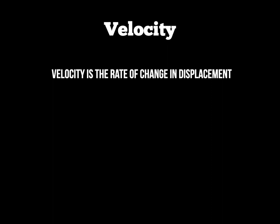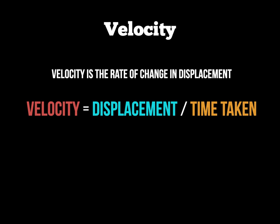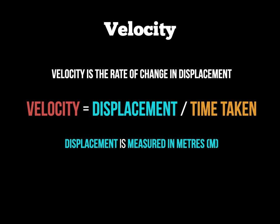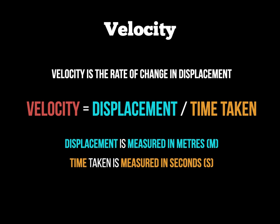Starting with velocity: velocity is the rate of change in displacement — that is, how far something travels from A to B. The calculation is: velocity = displacement ÷ time taken. Displacement is measured in metres, and you will only get marks if you give the correct units of measurement. Time taken is measured in seconds, so velocity is therefore measured in metres per second, written as m/s.